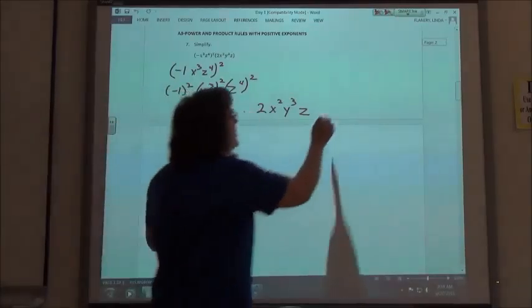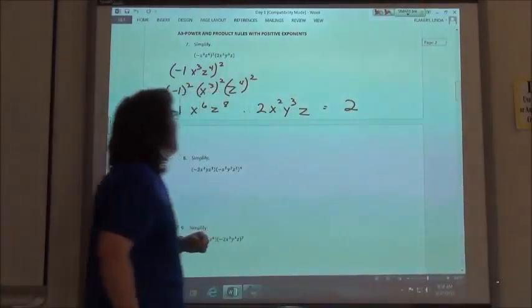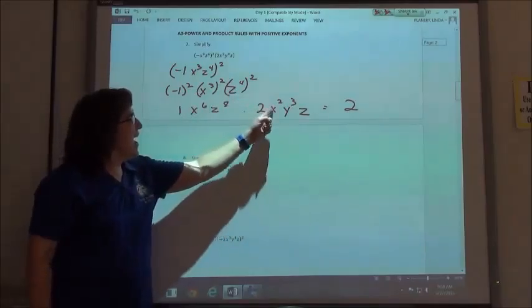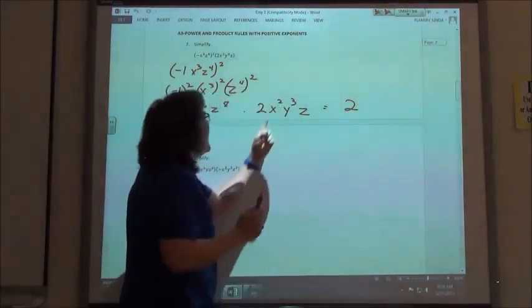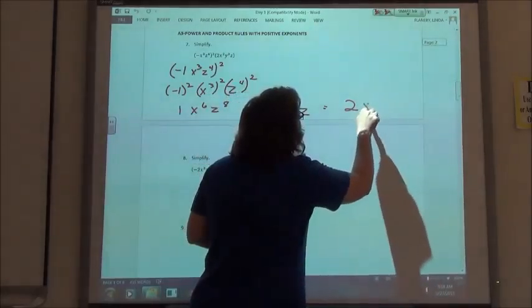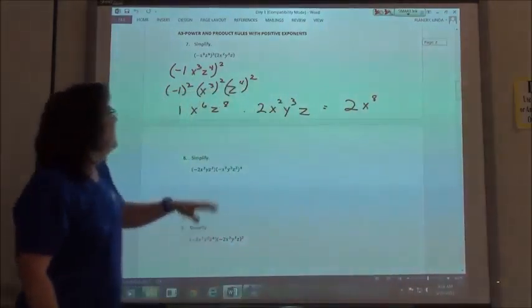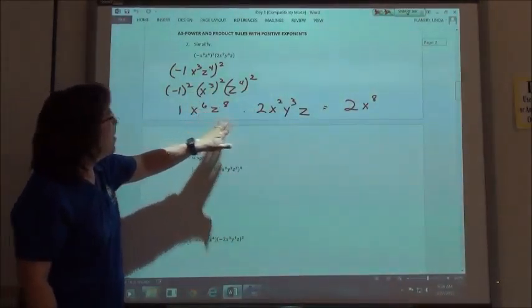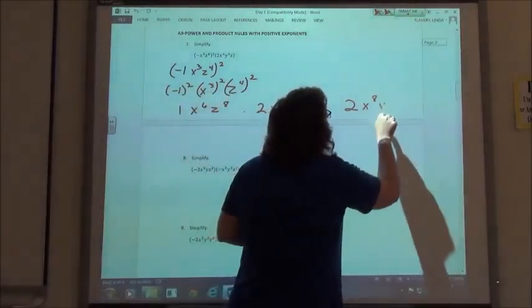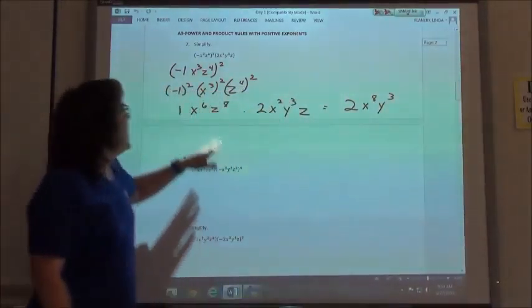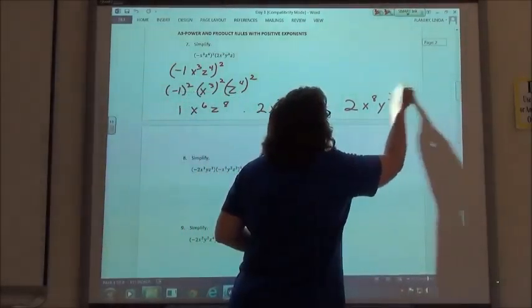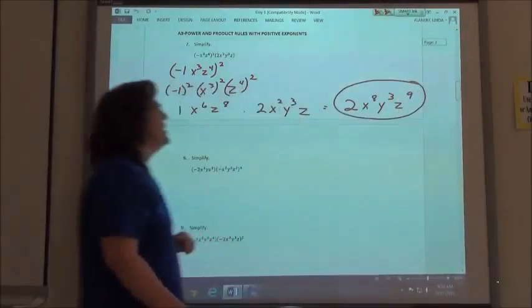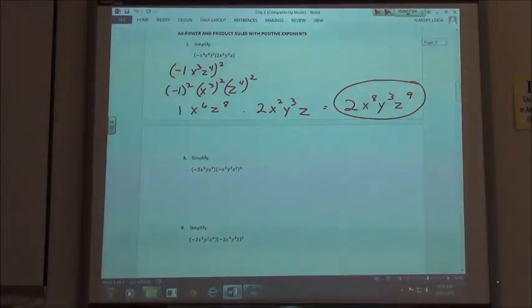So 1 times 2 is going to give me 2. When I multiply, I add my exponents, so x to the sixth times x to the second would be x to the eighth. I don't have any y's in this one, but I do have a y here, so y to the third, and then z to the eighth times z, z to the ninth. So my answer ends up being 2x to the eighth, y cubed, z to the ninth.